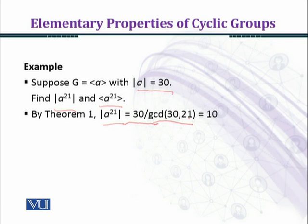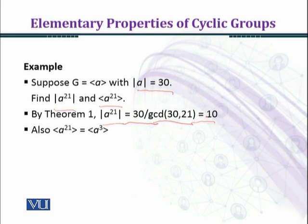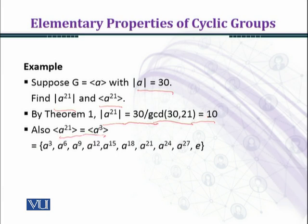We get 30 over 3, which equals 10. So the cyclic group generated by a^21 has 10 elements. We also know by previous results that the cyclic group generated by a^21 equals the cyclic group generated by a^3, since 3 is the GCD of 21 and 30, and the first part of Theorem 1 states that these are equal.